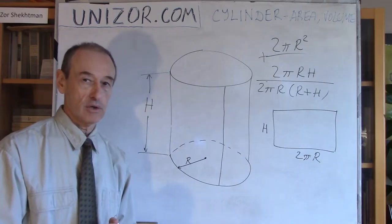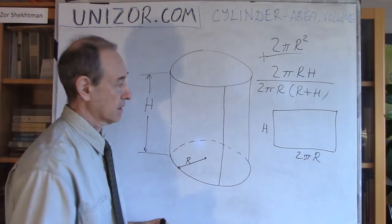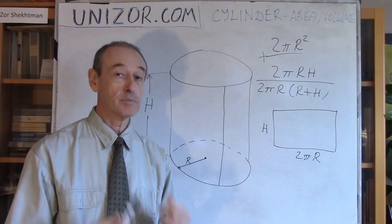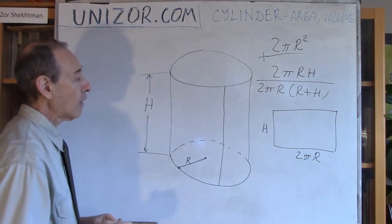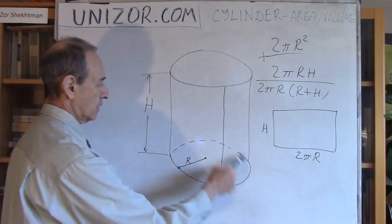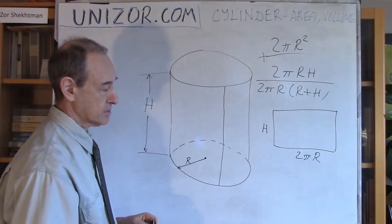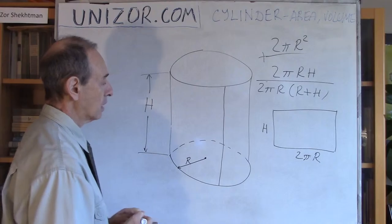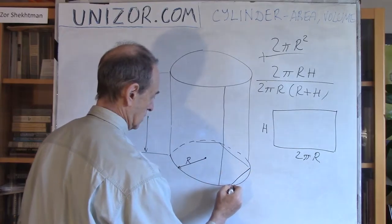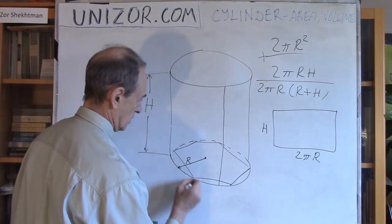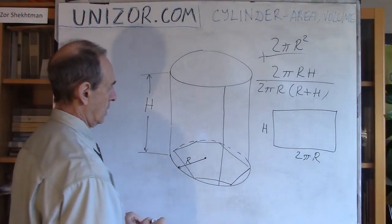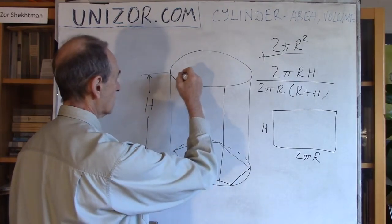Now let's talk about the volume. Volume is slightly more complex, and I don't think I can avoid using limit theory here. The way I'm going to do it is the following: let's inscribe into the circle — which is the base — a regular polygon with n sides. In this case, I have inscribed a hexagon.